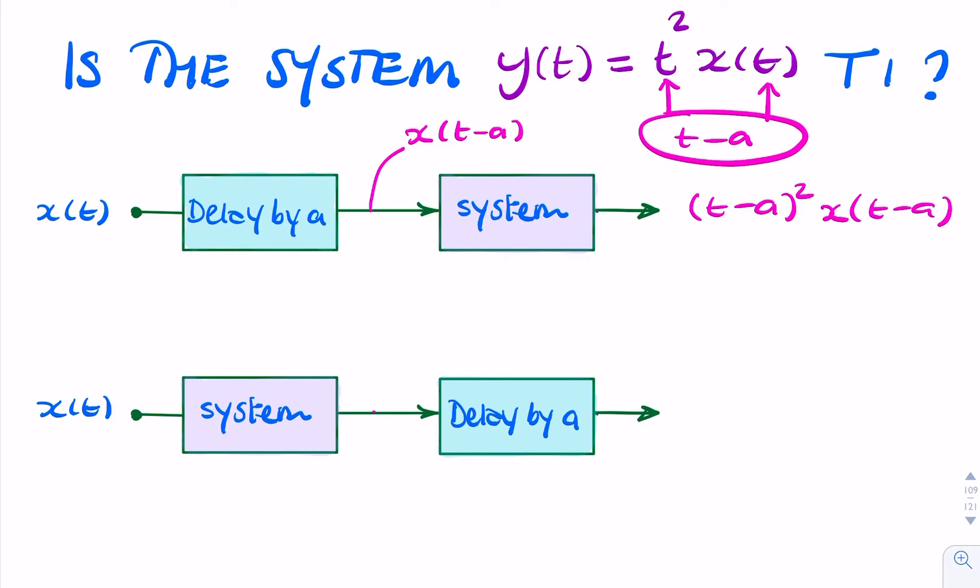And we can do this again, but this time we apply the delay after it's come out of the system. So the output of the system is as given in the question, t squared x of t.